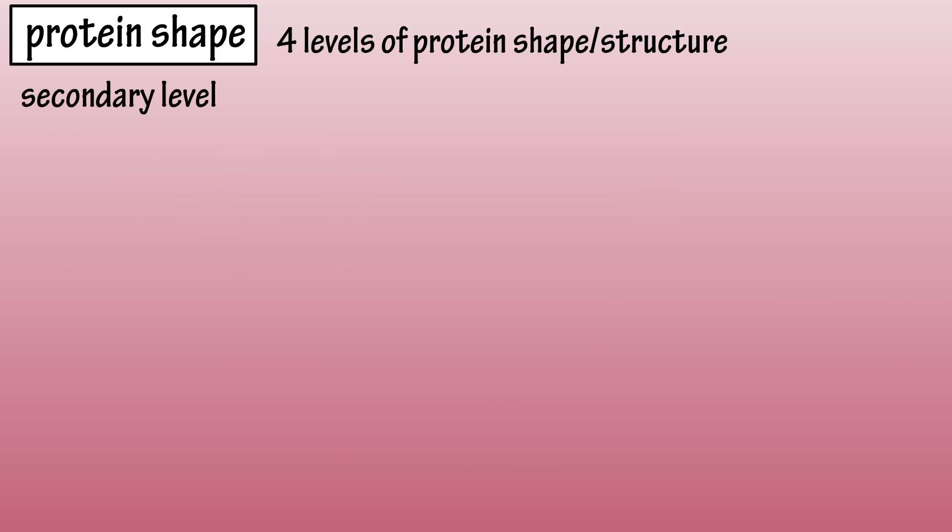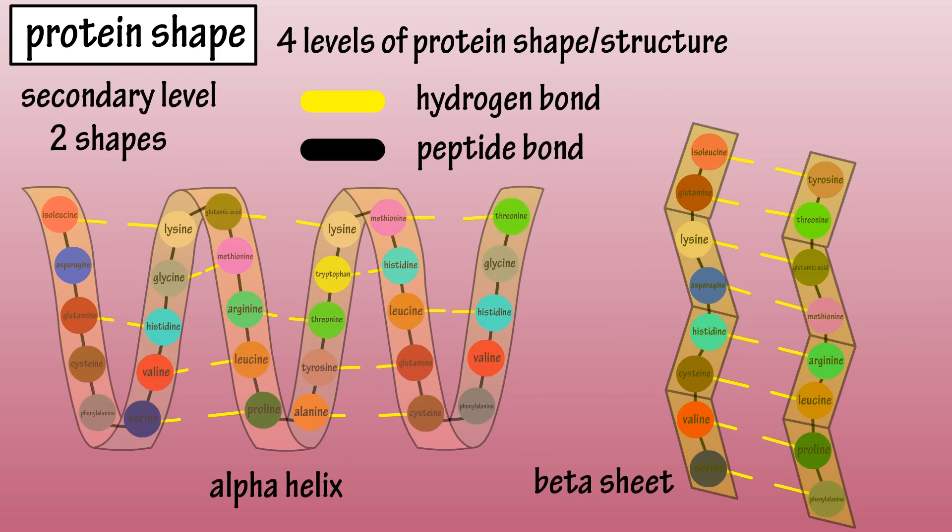The secondary or second level has two shapes: an alpha helix or coil-like formation, or a folded pattern called a beta sheet. In both structures, hydrogen bonds between amino acids stabilize the protein shape.